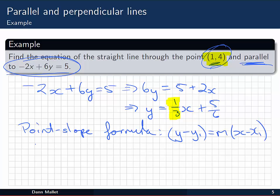So that means we need to use the point-slope formula, y minus y1 equals m, x minus x1. In this case, y minus 4 is equal to m, which is 1 third, x minus x1 is 1.